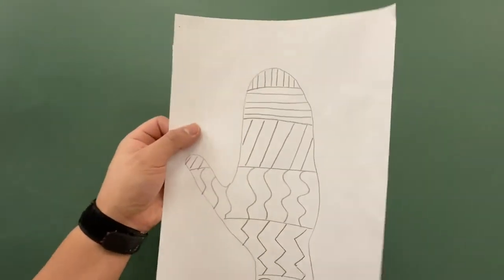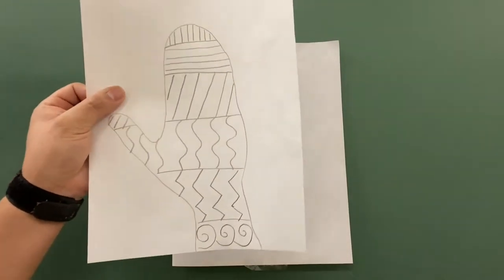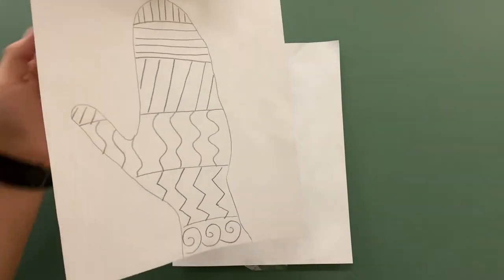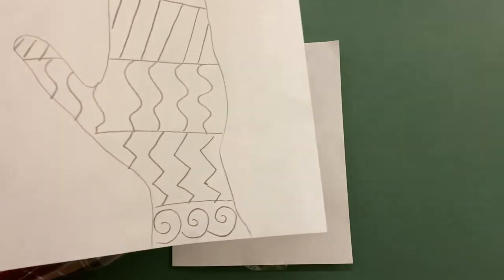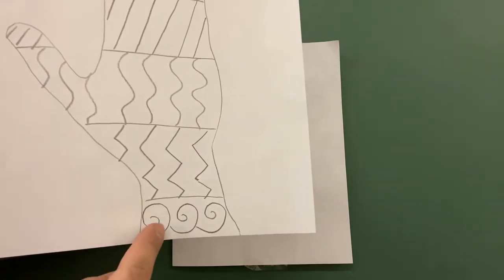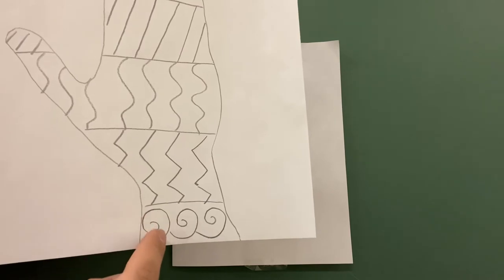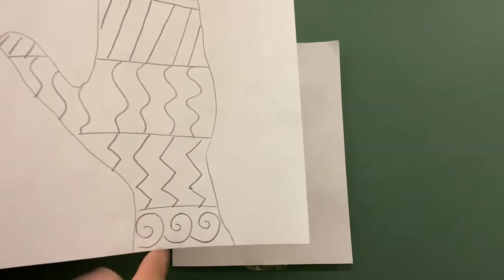Before we get to the drawing part I want to show you this again because I want to go over quickly what kinds of lines we are seeing in this drawing. The bottom part here, what kinds of lines are these? These are called spiral lines or swirls.